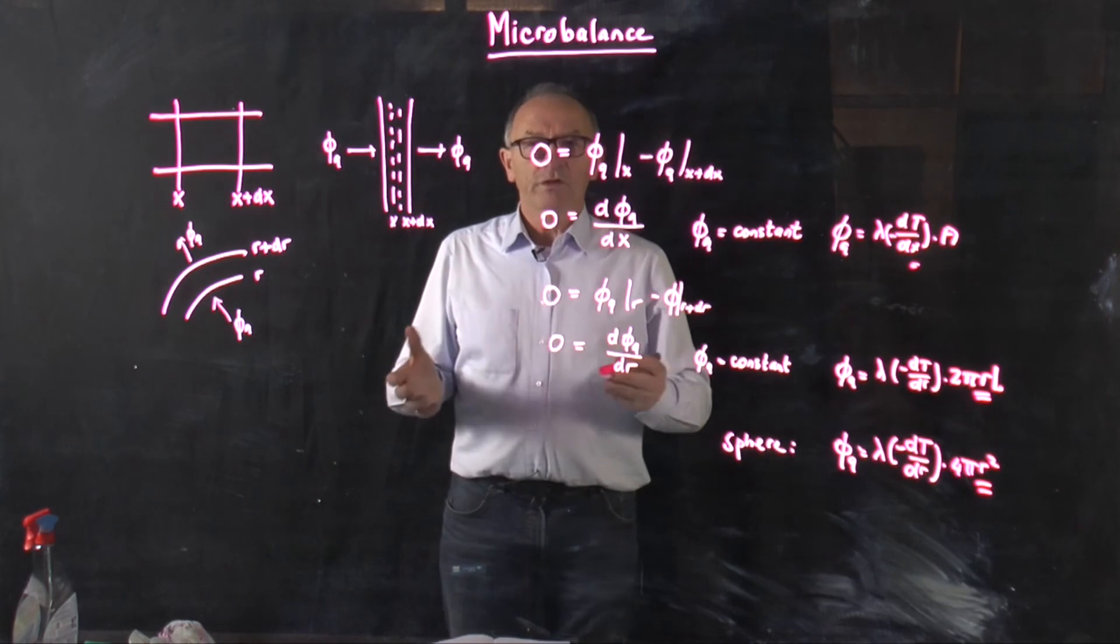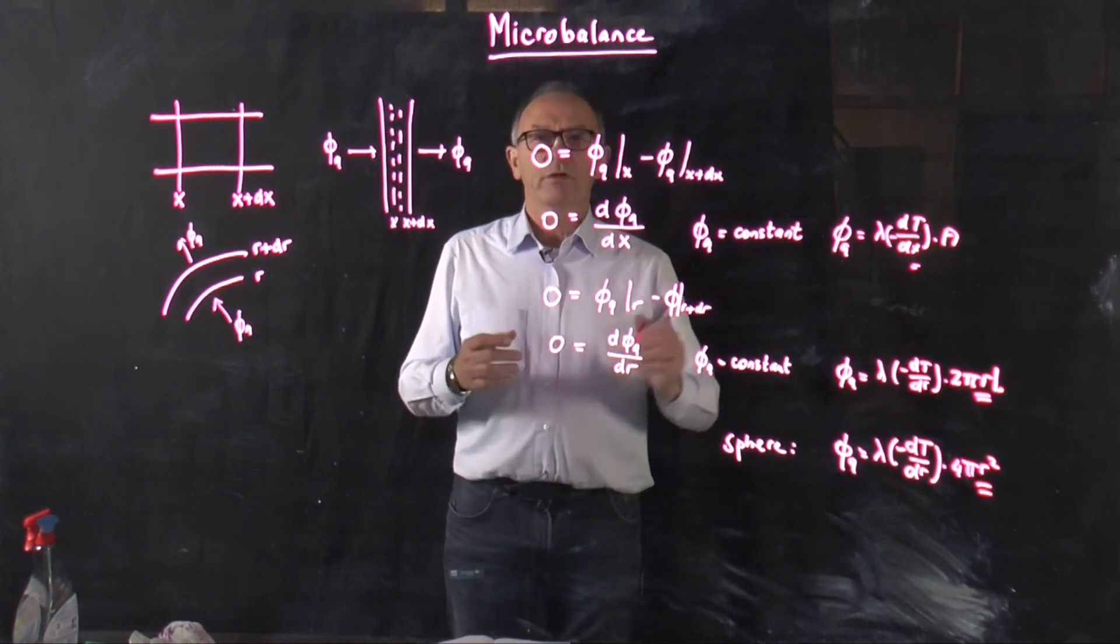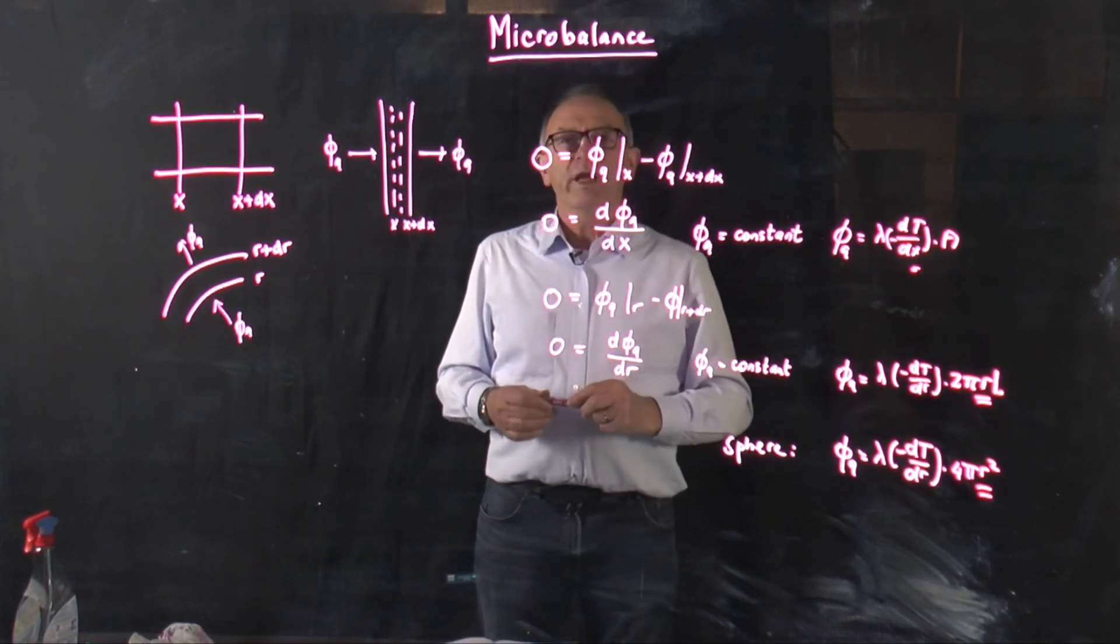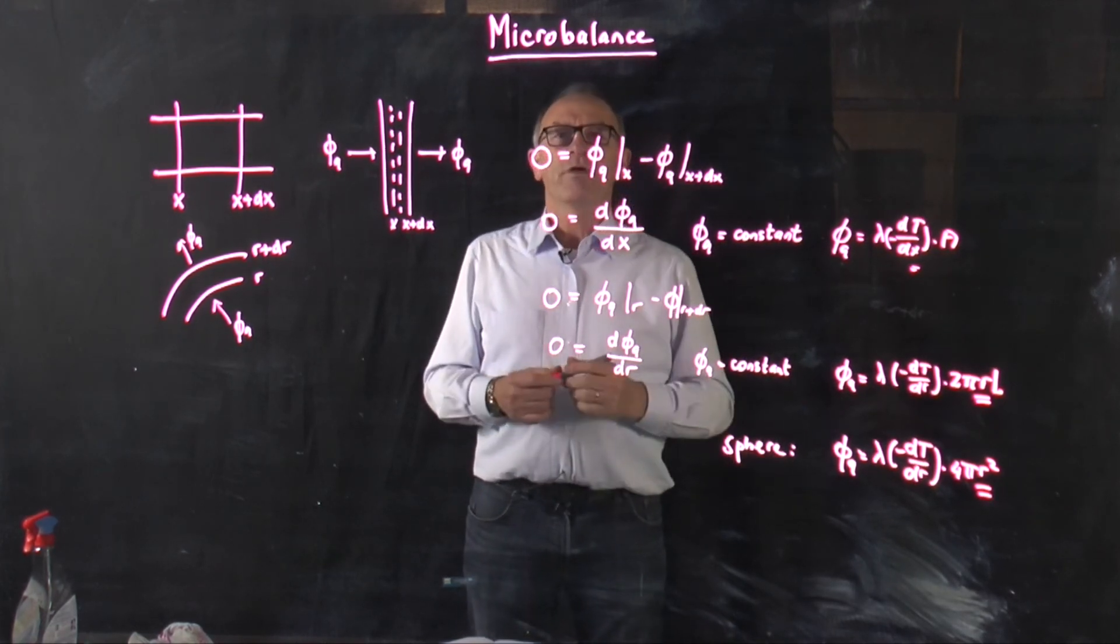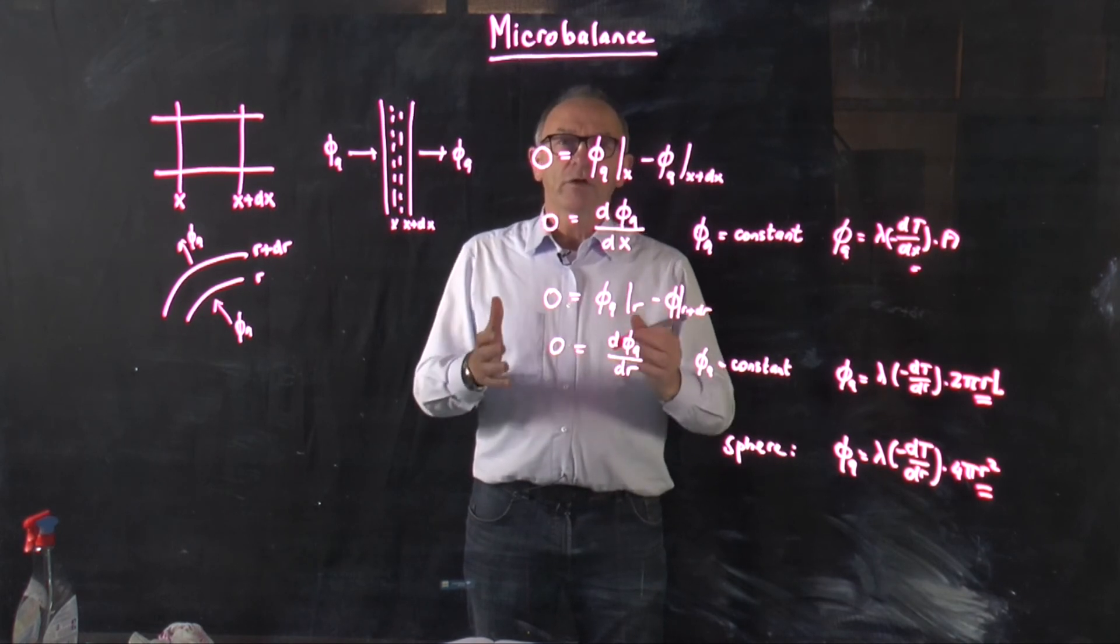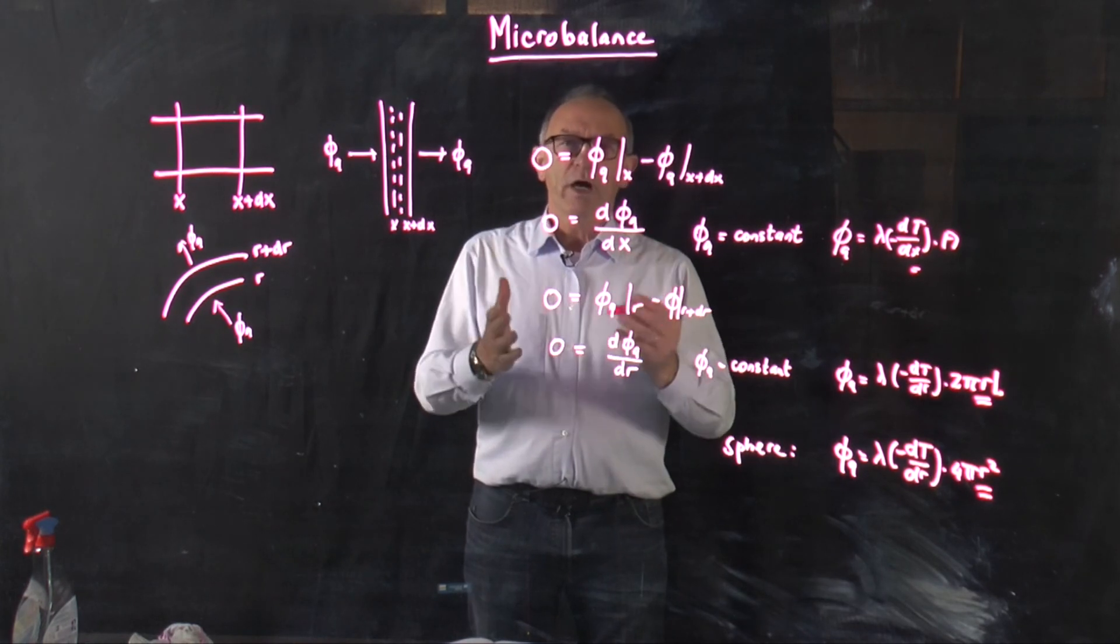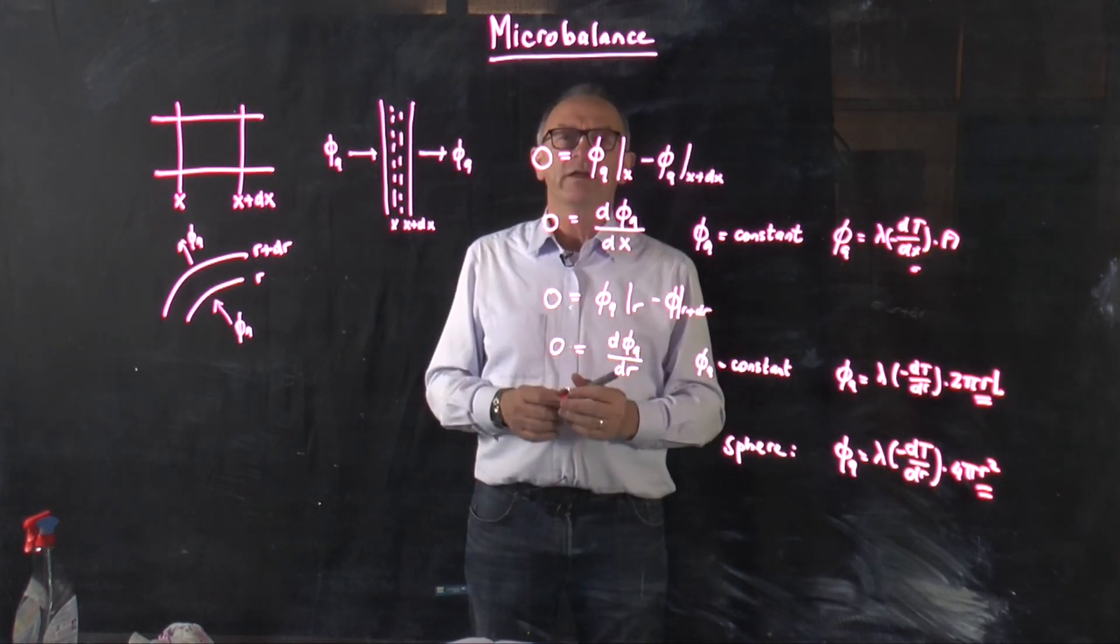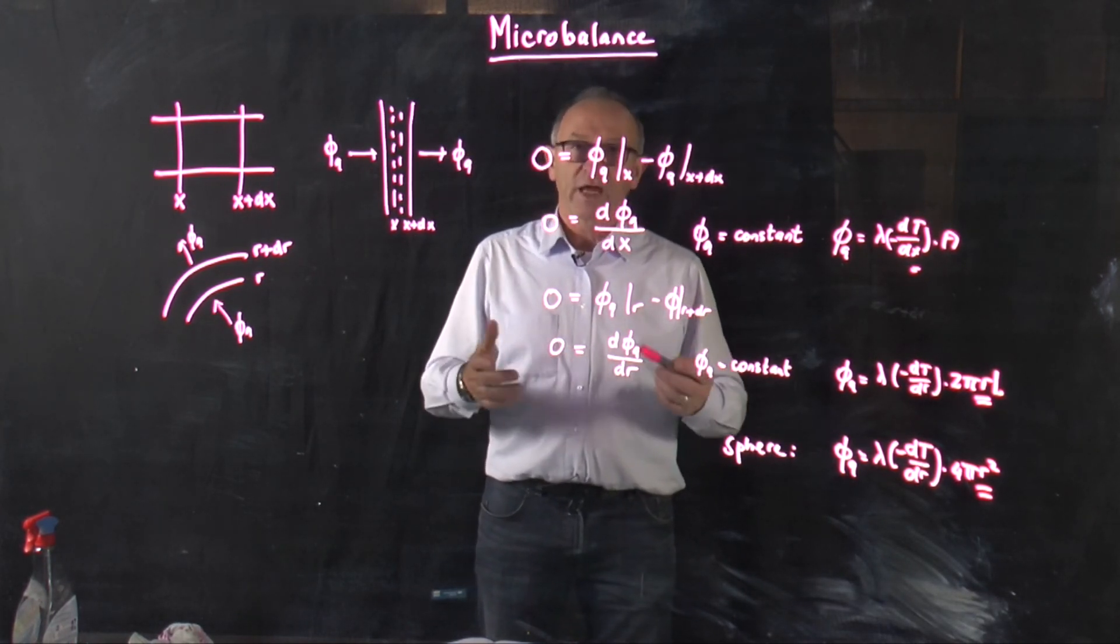The first one is linear. The second one will be containing a logarithm and the third one will have a reciprocal value of r in it. So try these equations and look and compare those with each other. And try to set up a microbalance by yourself. Because that's easy to do it for steady state. Later on we can do it also for unsteady state situations. Thanks!